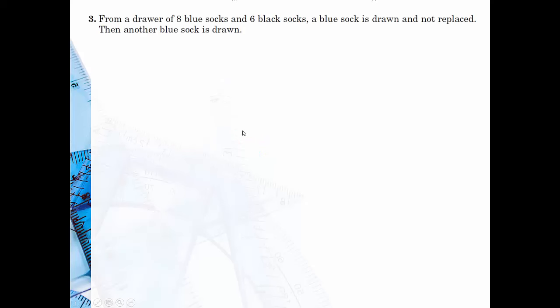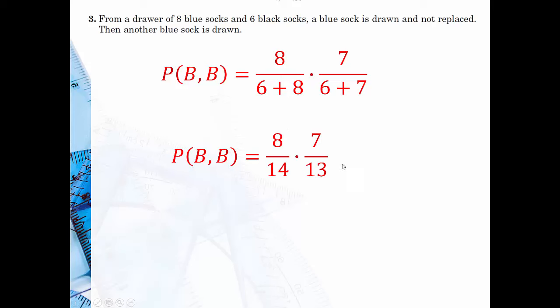From a drawer of eight blue socks and six black socks, a blue sock is drawn and not replaced, then another blue sock is drawn. So we're going to do the probability that a blue sock is drawn, not replaced, and then another blue sock is drawn. It's eight over the total number of socks—eight blue and 14 total—times seven over 13. So eight out of 14 times seven out of 13.